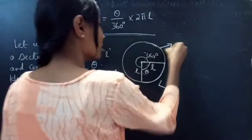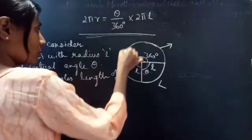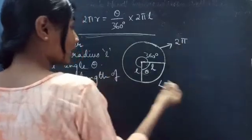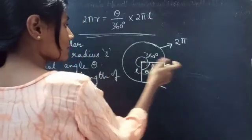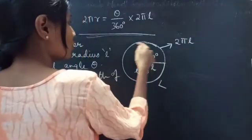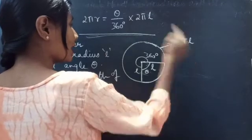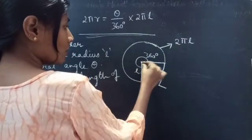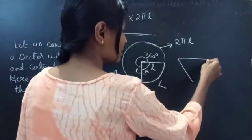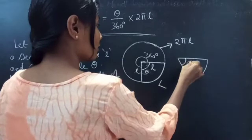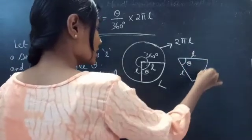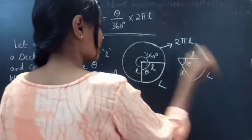This is a circle. We know that the circumference of a circle is 2πr. Here L is the radius of the circle, so the circumference of the circle is 2πL. Now let us consider the sector with angle theta, radius L, and arc length capital L.